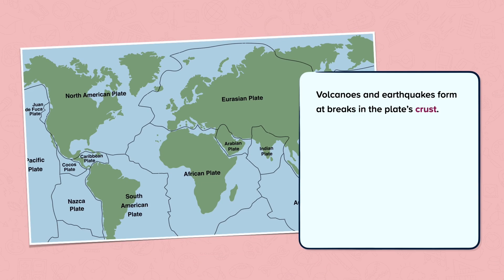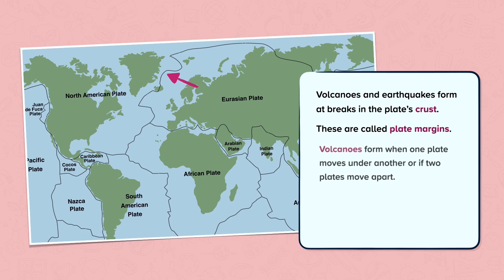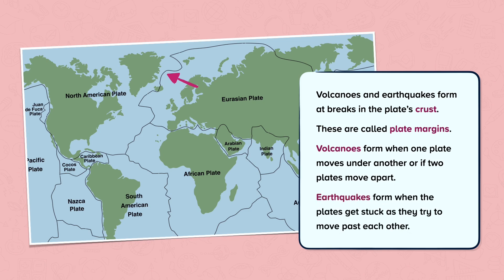Volcanoes and earthquakes form at breaks in the plate's crust, called plate margins. Volcanoes form when one plate moves under another, or if two plates move apart. Earthquakes form when the plates get stuck as they try to move past each other.